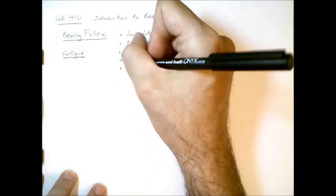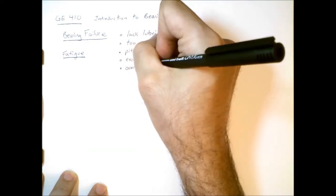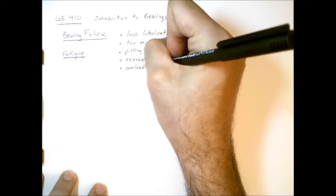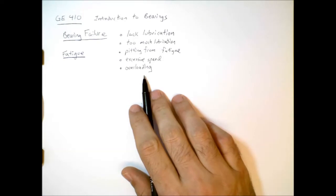Another type of failure mode is from overloading. For example, if we apply enough radial force to a bearing that its surfaces deform plastically, then that can also damage the bearing.